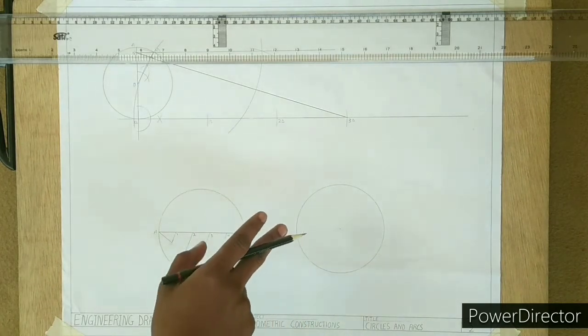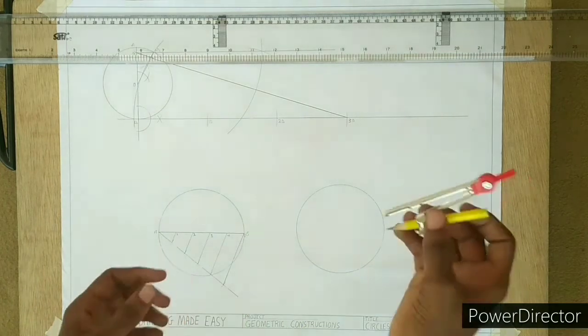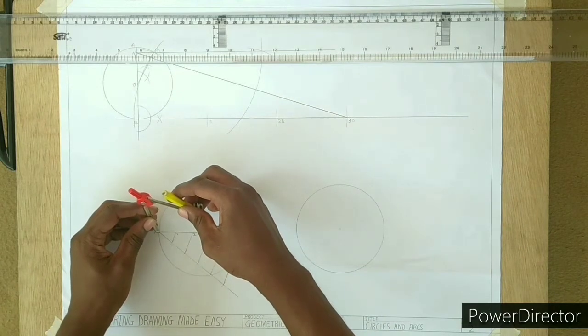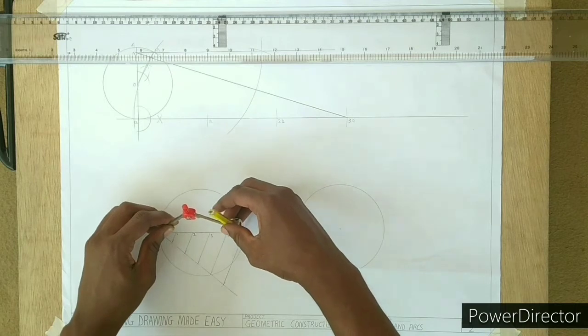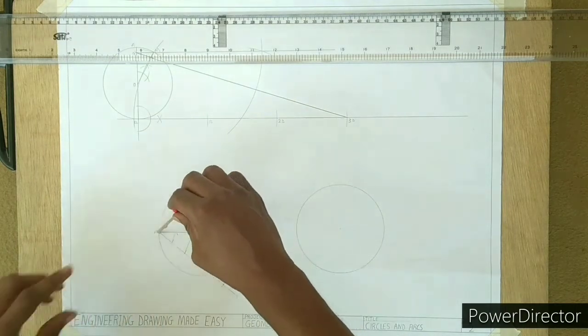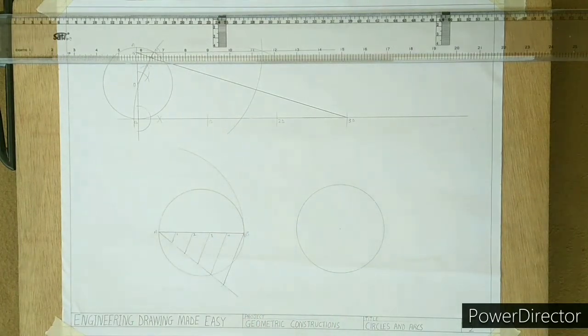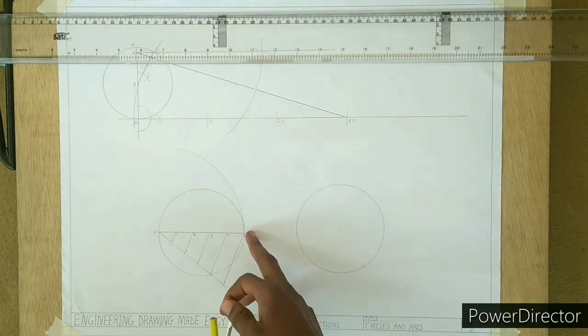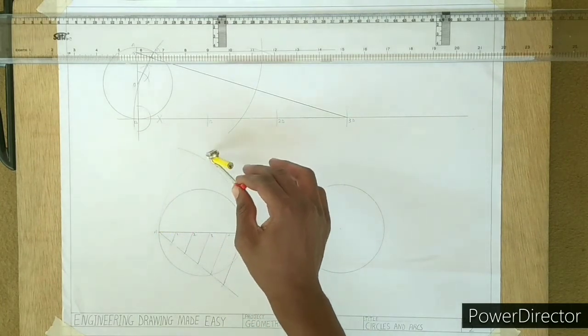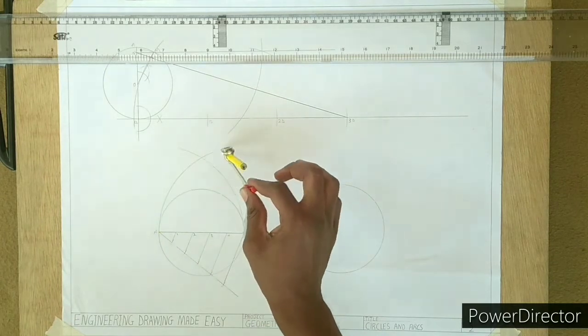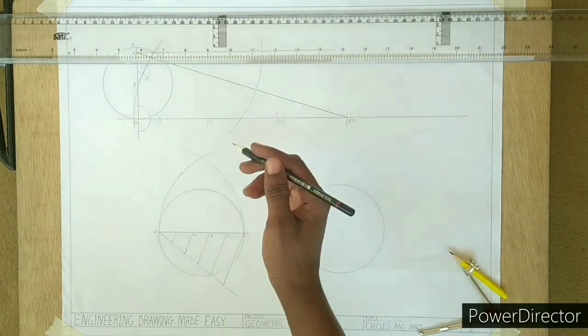The second step is to draw an arc with A as the center and AB as radius. Repeat this step, this time with B as center and AB as radius. Label the intersection of the two arcs as M.